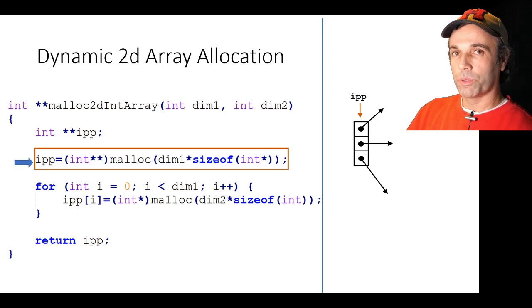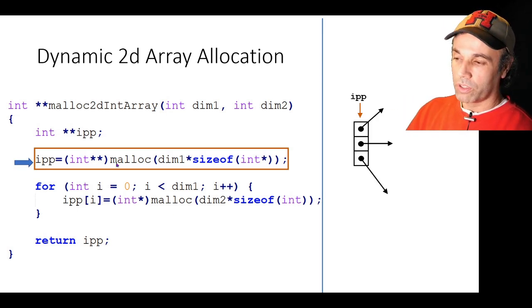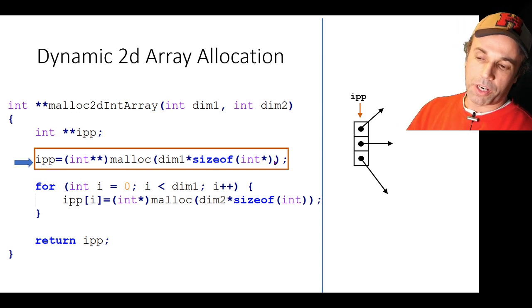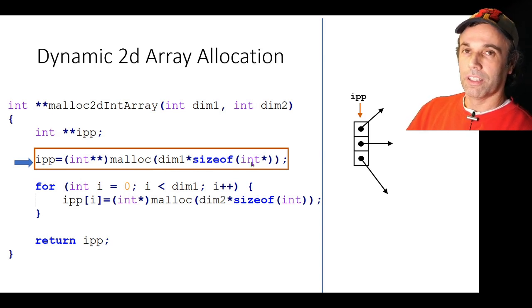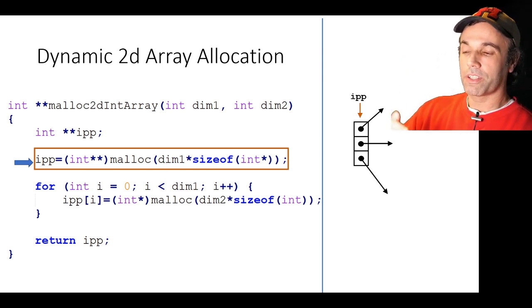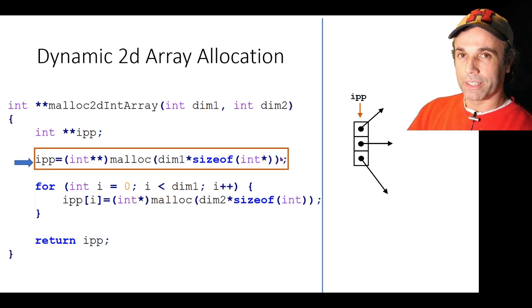Okay, so the next line is super important. We make a call to malloc and that's saying memory allocate us whatever the number is in here in bytes. Now what is that number? Well we've got dim1 times the size of an int star. Now let's say an int star is eight bytes and dim1 is three because we're going to say that's the number of rows in the array that we're trying to allocate. This is going to give us 24 bytes.